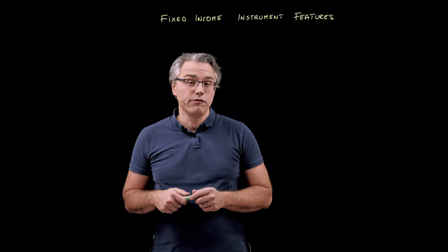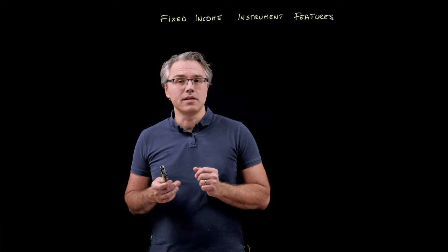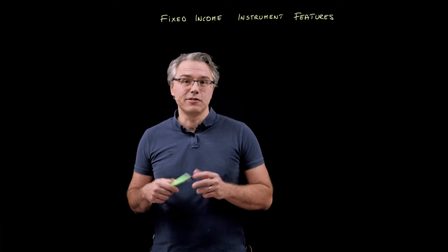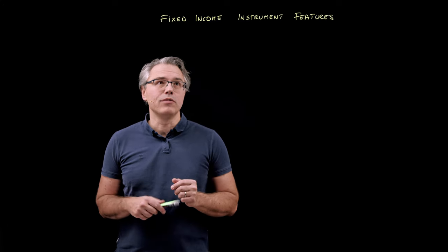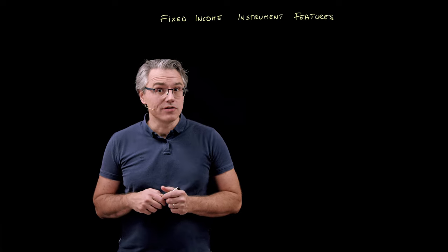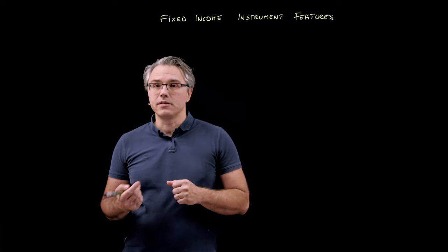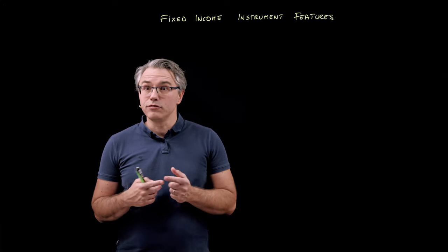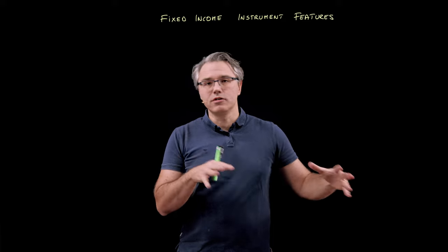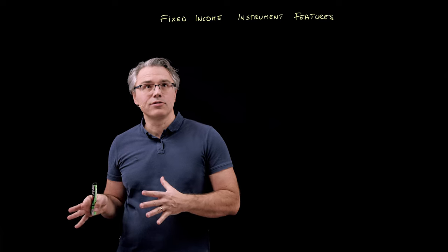In this video, I want to go through the most important topics in the first learning module for the fixed income part of the curriculum at level 1. That module is called Fixed Income Instrument Features. Before we get to the actual features, we'll talk about things like the maturity date, the coupon rate, the nominal value or principal, and so on.